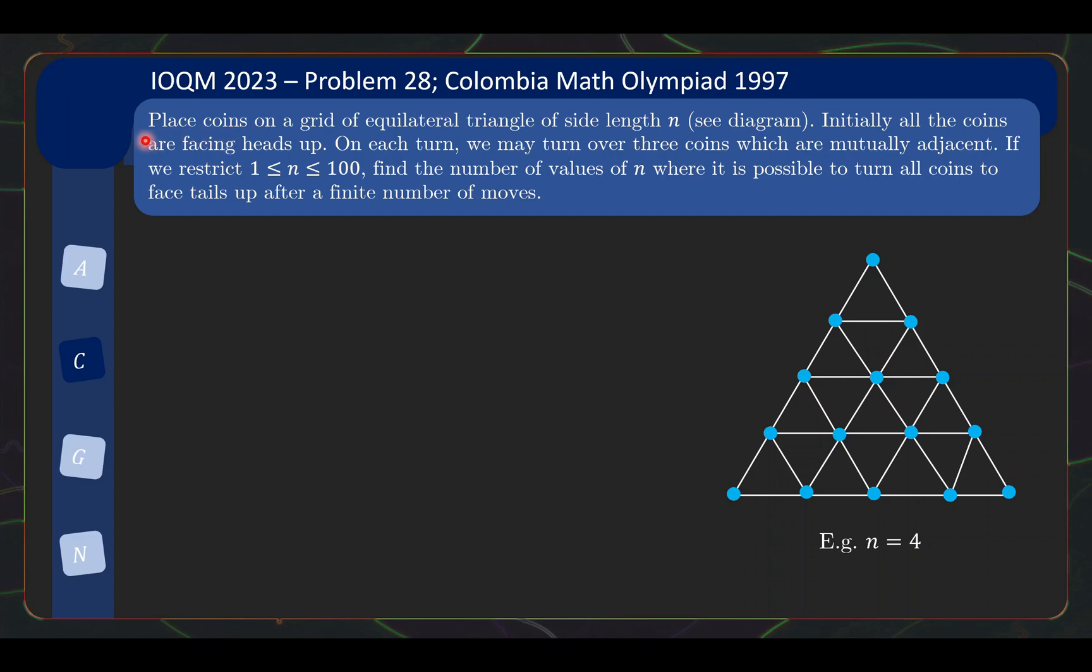So for this problem, we are going to place coins on a grid of equilateral triangle of side length n. So just to illustrate, this is an equilateral triangle of side length 4. And then we basically have a grid over here in the standard way. And each of the corners here of the small equilateral triangle will have a coin on it. Initially, all the coins are facing heads up. And then on each turn, we may turn over three coins which are mutually adjacent.